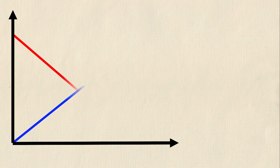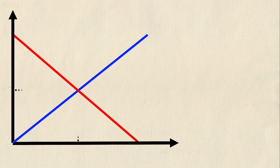To illustrate this we're going to start with our basic supply and demand graph. We have our axes, our actual curves, and everything is labeled. Price is labeled on the y-axis, quantity is on the x-axis, and where the supply curve — which is upward sloping in blue — and the demand curve — which is downward sloping in red — intersect is P star and Q star, and we call that point equilibrium.